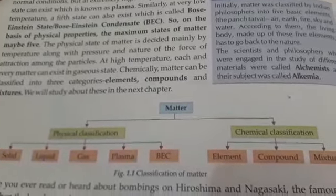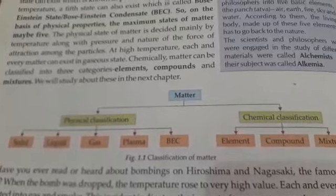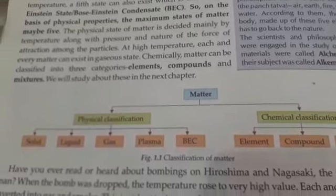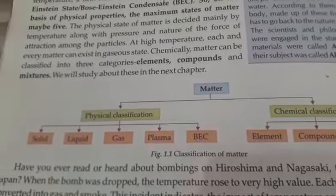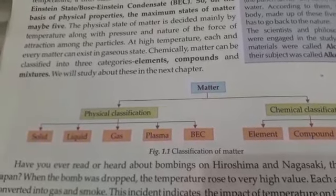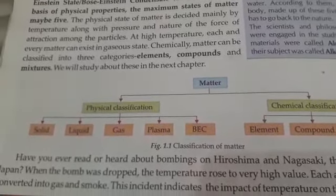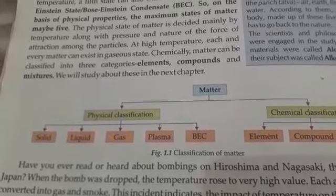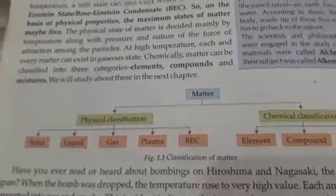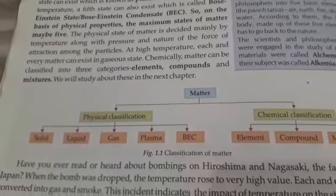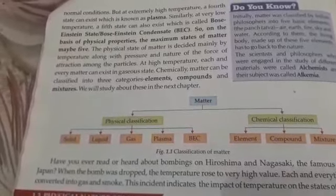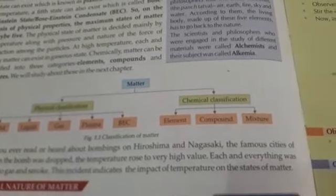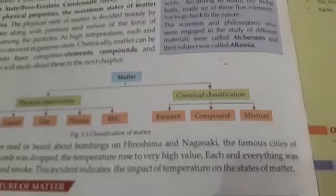Matter particles are classified into two categories: physical and chemical. Physically, three main states are there — solid, liquid, and gas — but nowadays we study about two more states, that is plasma and BEC (Bose-Einstein Condensate). We will discuss these in detail later on. So physically, matter is divided into five states: solid, liquid, gas, plasma, and BEC.